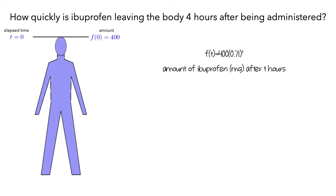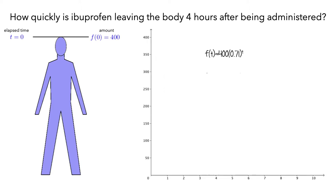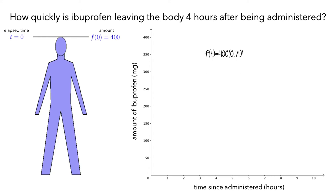To help us think about the scenario, let's make a graph of our function. We'll have the horizontal axis be the elapsed time in hours since the ibuprofen was administered, and the vertical axis be the amount of ibuprofen in mg. Now let's draw the graph of f.